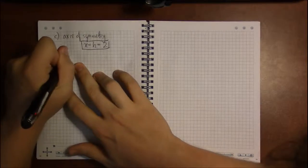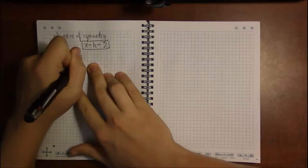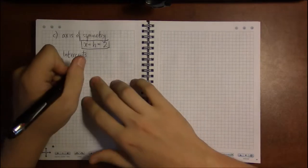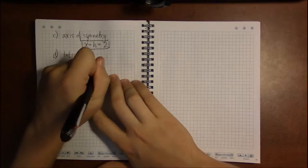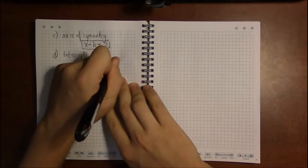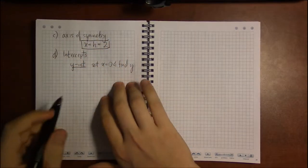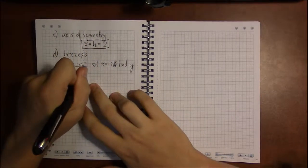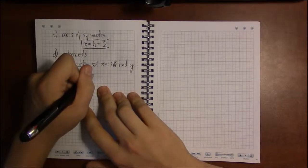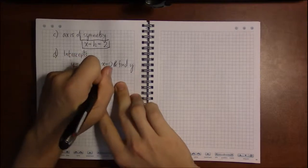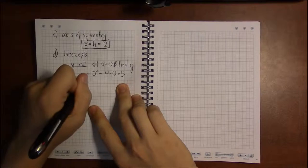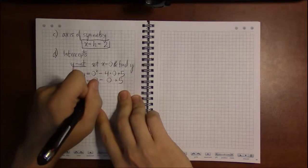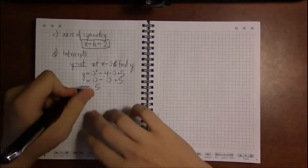You can do the y-intercepts first, which will invariably be easier. So we're going to set x equal to 0 and find y. Letting x be 0, we get 0 squared minus 4 times 0 plus 5. So that's 0 minus 0 plus 5. 0 minus 0 is 0, and 0 plus 5 is 5, so y equals 5 is our y-intercept.